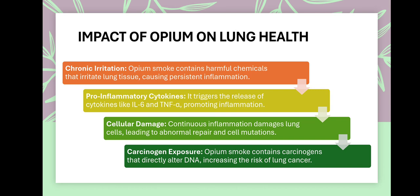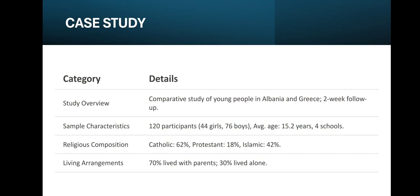Impact of opium on lung health. As a chronic irritant, opium smoke contains harmful chemicals that irritate lung tissue, causing persistent inflammation, pro-inflammatory cytokines, cellular damage, and carcinogen exposure.